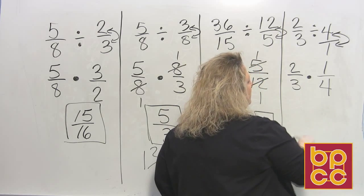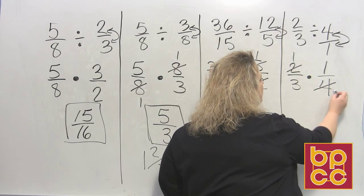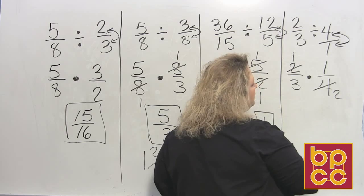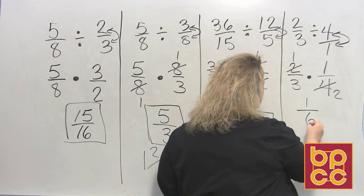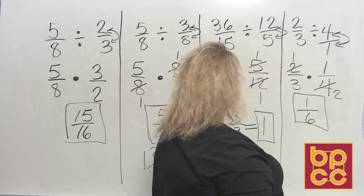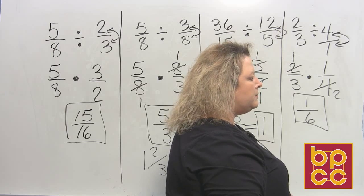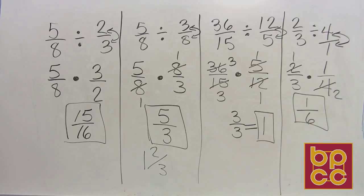All right, so can I reduce any of this? Yes. 2 divides into 2 once. 2 divides into 4 two times. And then you do top times top, 1. Bottom times bottom, 6. Now those are all in lowest terms. And that's as much as we can do. And that ends our lesson on dividing fractions.